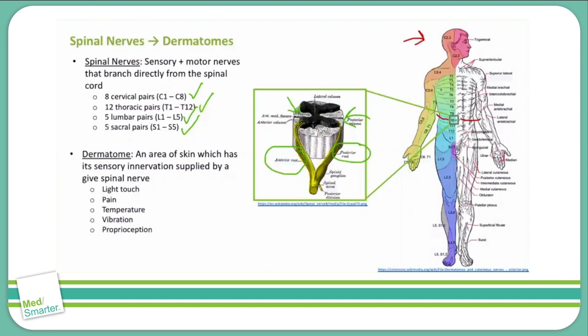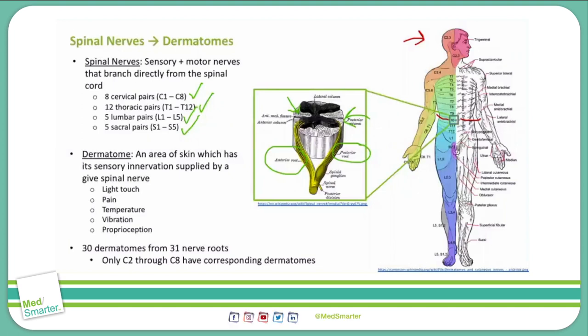As you can see from this map, all the dermatomes are different shapes and sizes, so memorizing them all can be quite challenging. Now since there are 31 pairs of spinal nerves, you'd expect there to be 31 dermatomes. However, the C1 nerve root has no corresponding dermatome, so there are actually only 30 dermatomes from a total of 31 spinal nerves.